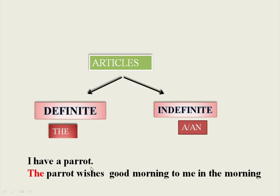I have a parrot. The parrot wishes good morning to me in the morning. In the first example, we use the indefinite article 'A' before the word parrot, because we use the indefinite article before a singular common noun. 'Parrot' is a singular common noun and also begins with a consonant sound. Therefore, we use the indefinite article 'A'.